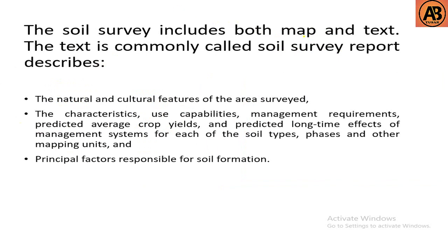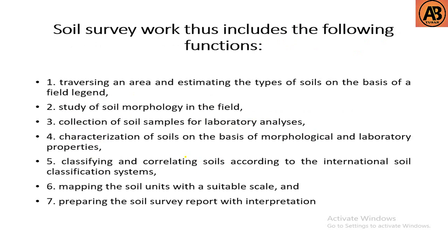Soil survey includes both a map and text. The text is commonly called the soil survey report, which describes the natural and cultural features of the area surveyed. It covers characteristics, use capabilities, management requirements, predicted average crop yields, and predicted long-term effects of management systems for each soil type, phase, and mapping unit — which are known as the principal factors responsible for soil formation.